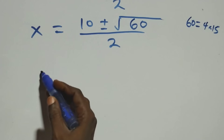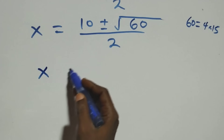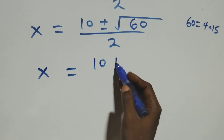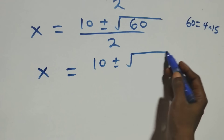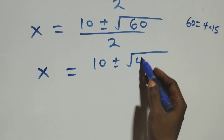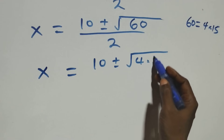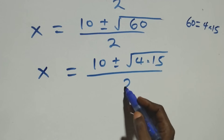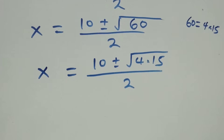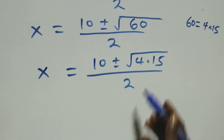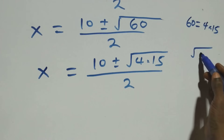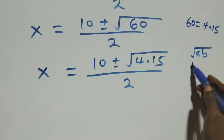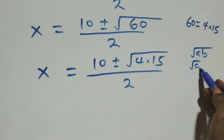This implies x equals to ten plus or minus square root of four times fifteen, all over two. We use the rule that root of a times b equals root a times root b.